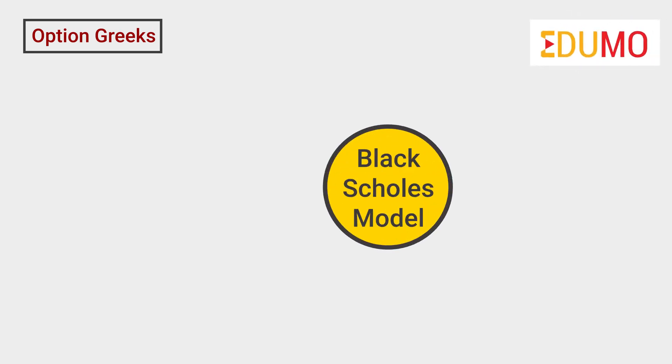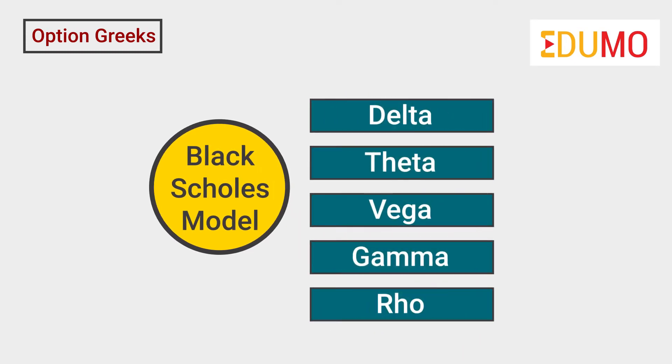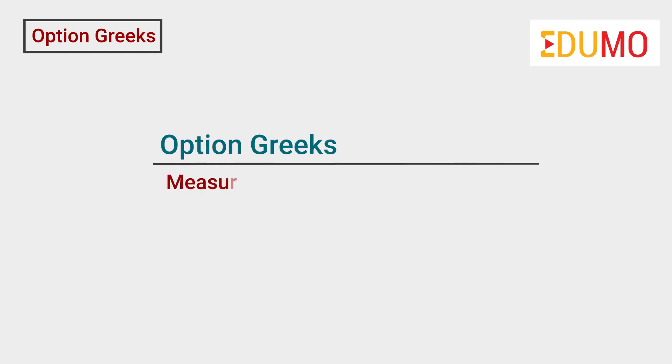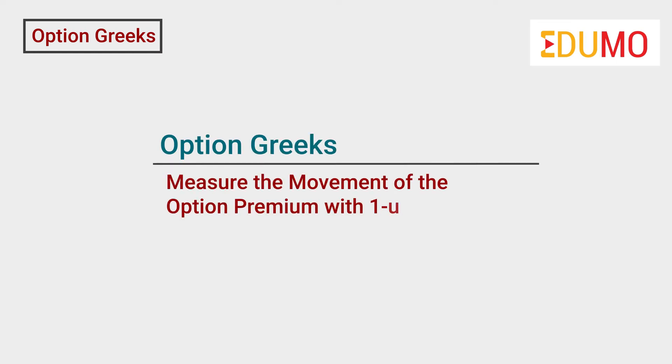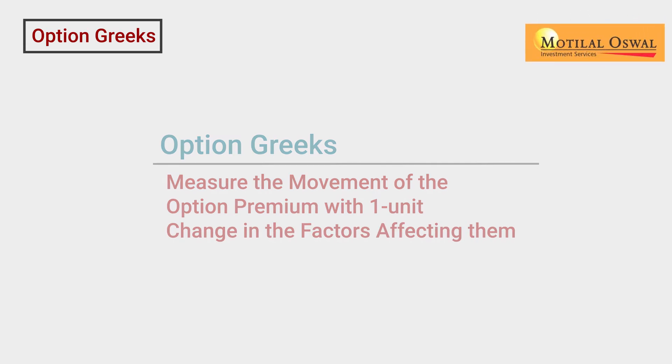The concept of option Greeks originates from a theoretical model, i.e., the Black-Scholes model. According to the Black-Scholes model, there are five important Greeks. Option Greeks basically measure the movement of the option premium with one unit change in the factors affecting them. Let's understand the Greeks one-by-one for better clarity.